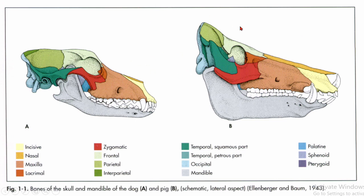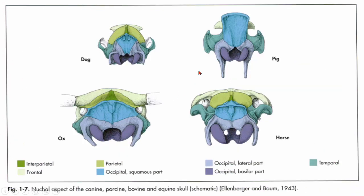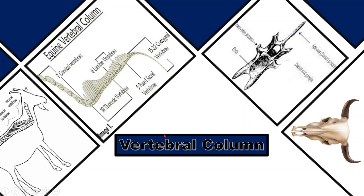Similarly, this is the picture of the skull of a dog and pig. This is the picture of the posterior part of the skull of a dog, pig, ox, and horse. In this picture, the interparietal bone is here. This one is the parietal bone, this one is the frontal bone, and the occipital bone is divided into three parts: the occipital squamous part, the occipital lateral part, and the occipital basilar part. This one is the temporal bone.